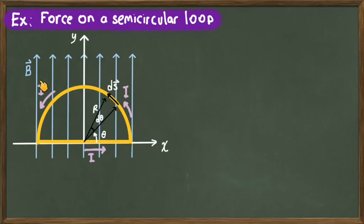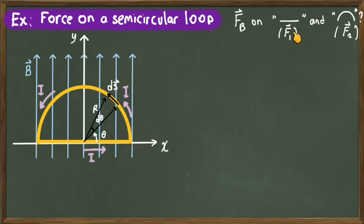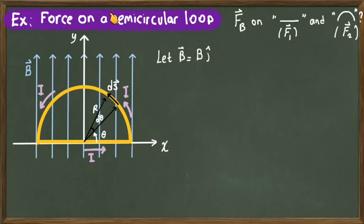We have a semicircular wire that carries a current I, placed in a uniform magnetic field B. We will calculate the magnetic force on the straight part of this loop, which carries current I in the positive x direction, and also on the semicircular part. We call these forces F1 and F2 respectively, and let the magnetic field B be expressed in unit vector notation as B times j, the unit vector in the y direction.